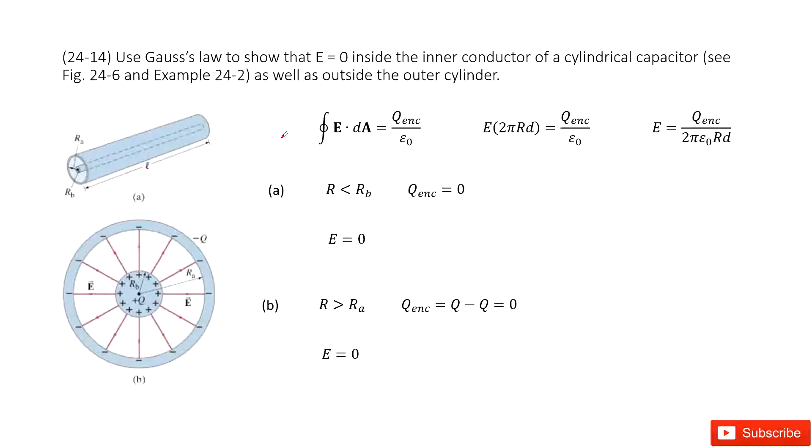Chapter 24 is about dielectrics, capacitance, and electric energy storage. So you can see we need to use Gauss's law to prove that E equals zero, the electric field is equal to zero inside the inner conductor of a cylindrical capacitor.